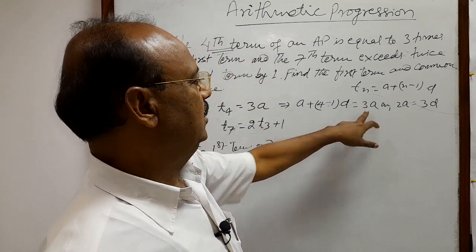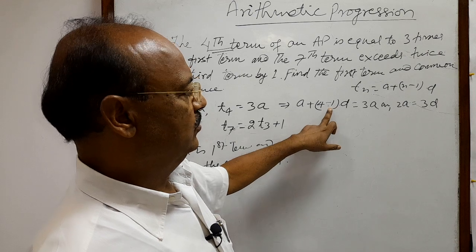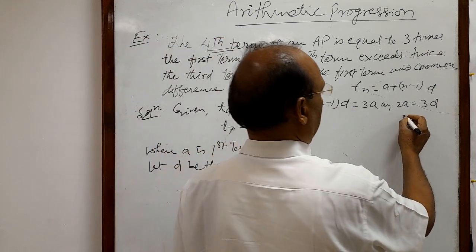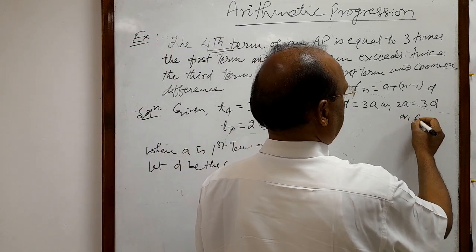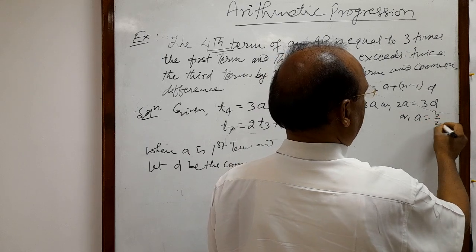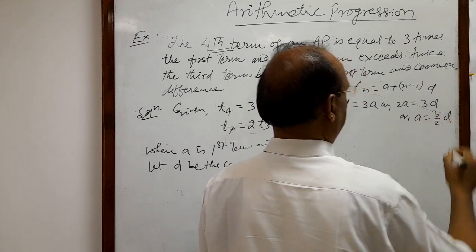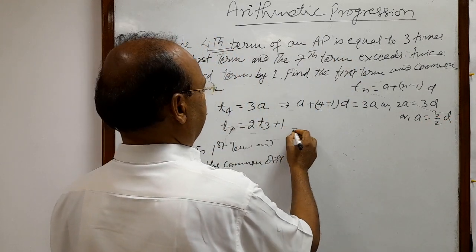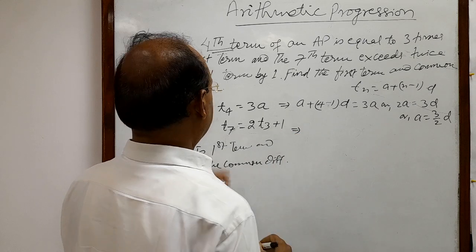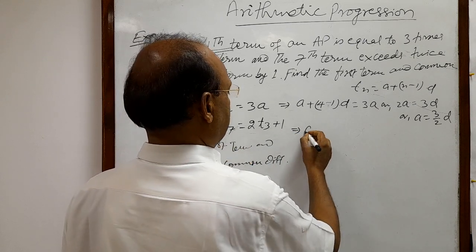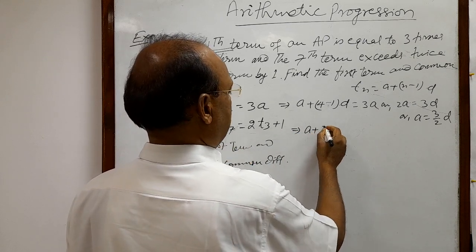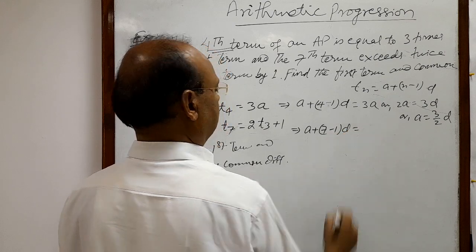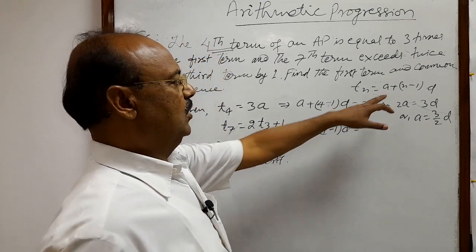Let us simplify: 3a − a = 2a and 4 − 1 = 3, so 2a = 3d. Therefore a = 3d/2.